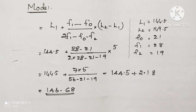Formula for finding mode is equal to l1 plus f1 minus f0 divided by 2f1 minus f0 minus f2, into l2 minus l1. Substituting each value, we will get the mode as 146.68.